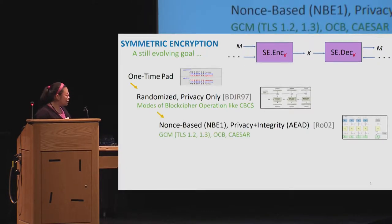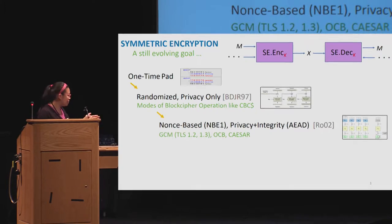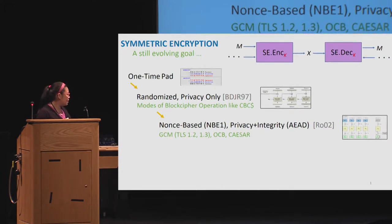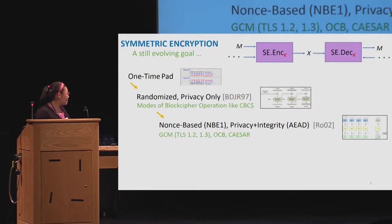Fast-forwarding to where we are currently, standards and protocols are using nonce-based encryption — what I'm going to call NBE1 syntax. Our security goals have moved from privacy only to now requiring privacy and integrity, better known as AEAD. The NBE1 schemes include GCM, which everyone knows is used in TLS, as well as OCB, the final portfolio of CAESAR, and similar schemes.